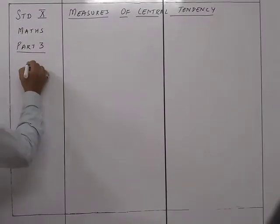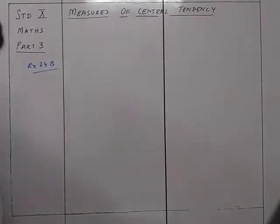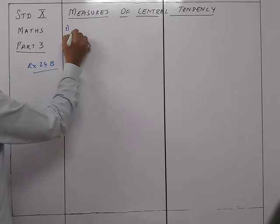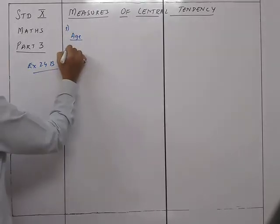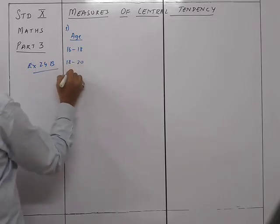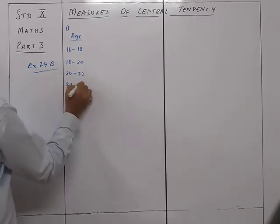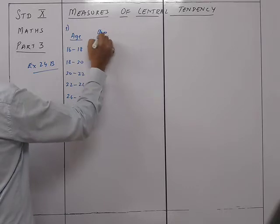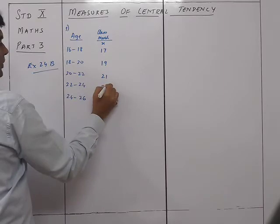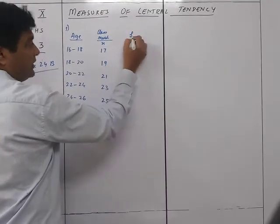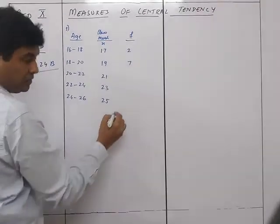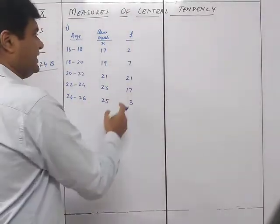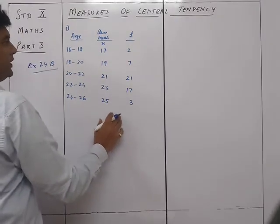Let's start with exercise 24b, sum number 1. The class intervals are 16 to 18, 18 to 20, 20 to 22, 22 to 24, and 24 to 26. The class marks are x = 17, 19, 21, 23, 25. Frequencies are 2, 7, 21, 17, and 3. Since multiplication seems difficult here, I'll use the shortcut method.